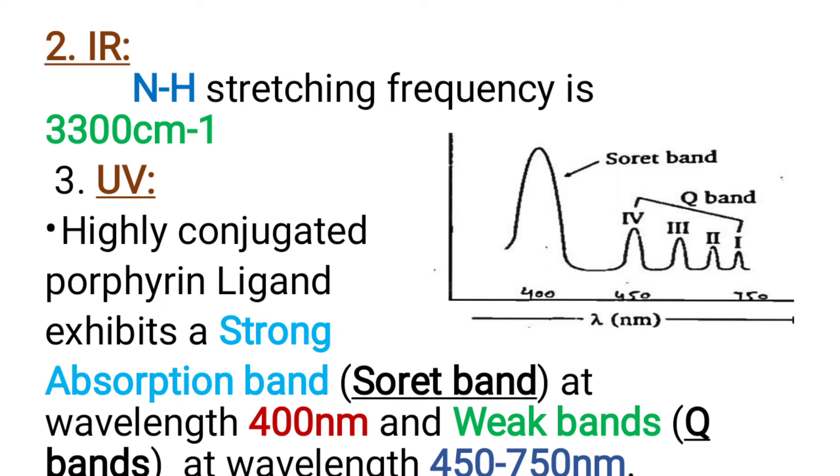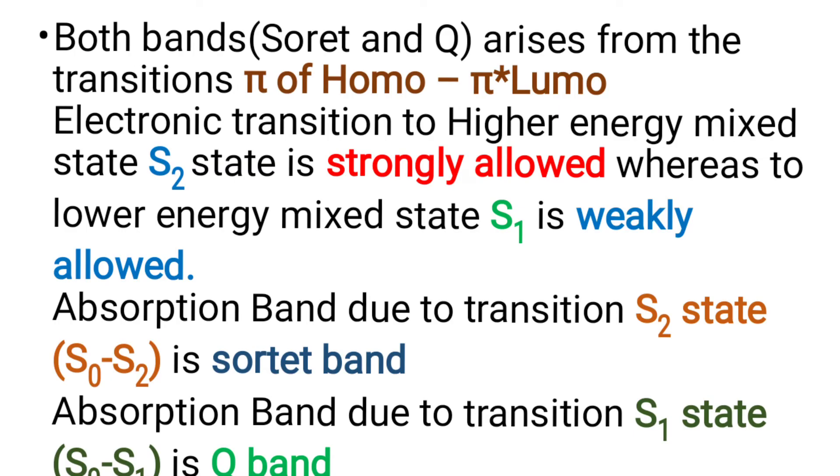Now the UV spectrum of porphyrin complex. The highly conjugated porphyrin ligand exhibits a strong absorption band, called the Soret band, at a wavelength of 450 to 750 nanometers. Both Soret and Q bands arise from the transition of pi of HOMO to pi star of LUMO. The electronic transition to higher energy mixed state S2 is strongly allowed, whereas to lower energy mixed state S1 is weakly allowed. The absorption band due to the transition S0 to S2 is the Soret band. The absorption band due to the transition S0 to S1 is the Q band.